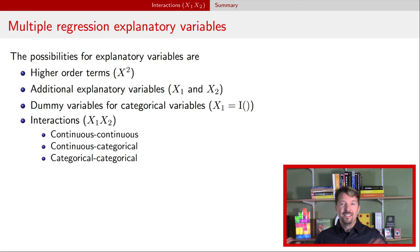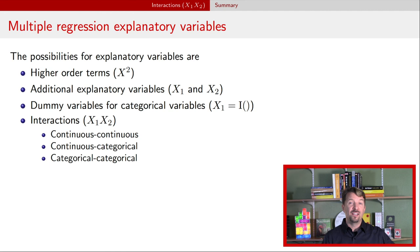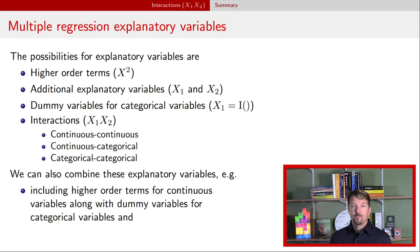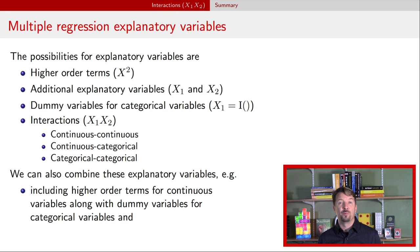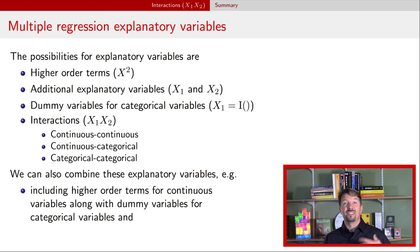To wrap up these last two videos on multiple regression: we introduced adding additional explanatory variables, and in this video, adding interactions. This creates a wide and very useful collection of models within the multiple regression framework. You can go even further — interactions need not be limited to two variables, and you can include transformations like the log of an explanatory variable. Next, we'll move on to other ways of summarizing data in multiple regression models, including ANOVA and contrasts.